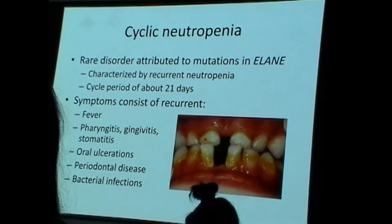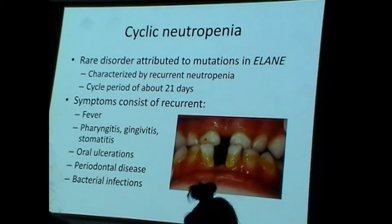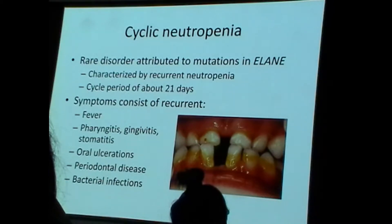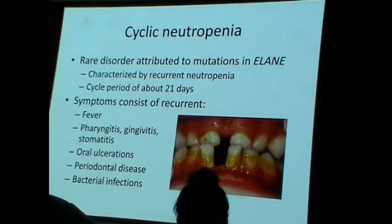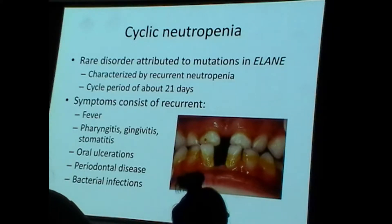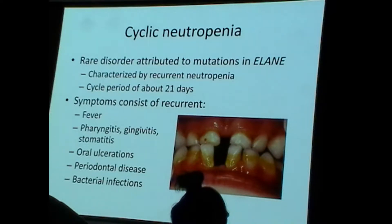Another neutropenia worth being aware of, certainly for boards, is cyclic neutropenia. Cyclic neutropenia is exactly what it sounds like — it is assessed over a six-to-eight-week course with blood values measured every two or three days. You can appreciate a cyclical nature in the white blood cell count. Within a cycle of about 21 days, there's a period of three to five days where there is a very low neutrophil count.